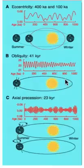The third parameter is known as precession. Precession has a periodicity of 23,000 years and describes the time of year at which the Earth is closest to the Sun and furthest away from the Sun.